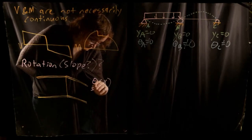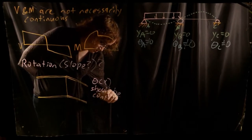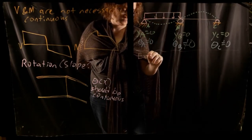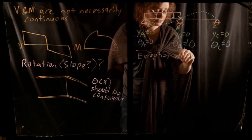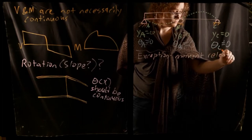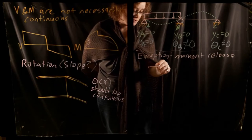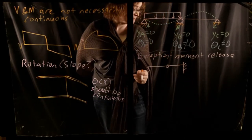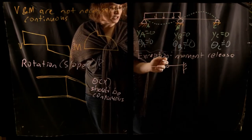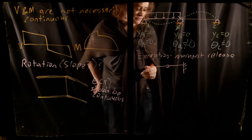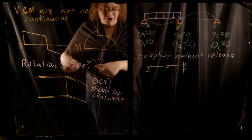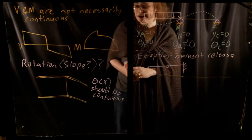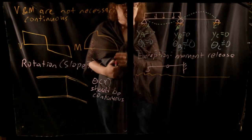There is one exception to slope continuity: the moment release, also called the internal pin. At a moment release location, you can have a sudden jump or drop in the slope of the beam because the pin allows motion of one piece relative to the other. But unless you have a moment release or internal pin, you should expect the slope to be a continuous curve along the entire length of the beam.